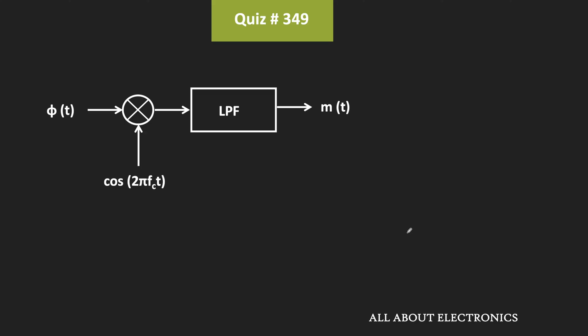At the receiver, if this VSB signal is multiplied with the carrier signal and then passed through a low pass filter, it is possible to recover the message signal. Let's say the response of this low pass filter is equal to H. After the multiplication, if we observe the signal, it is equal to M.